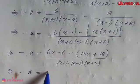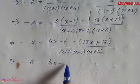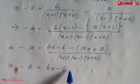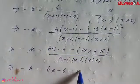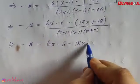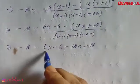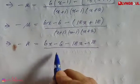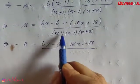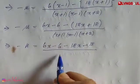So the numerator becomes: 6x minus 6, minus the bracket 18x plus 18. Using the identity a plus b into a minus b equals a squared minus b squared, the denominator simplifies to x squared minus 1 into x plus 2.